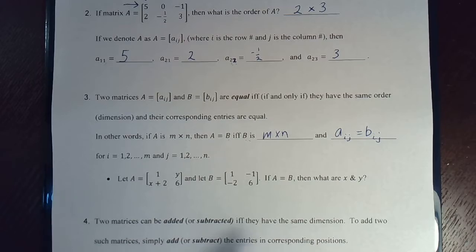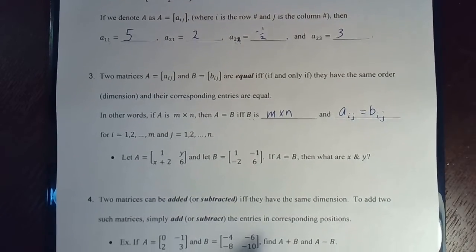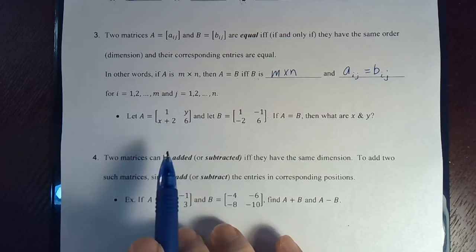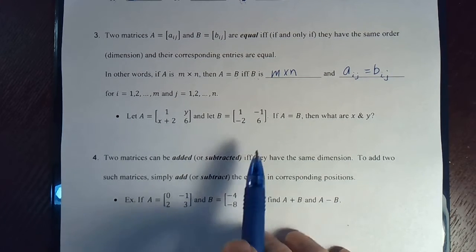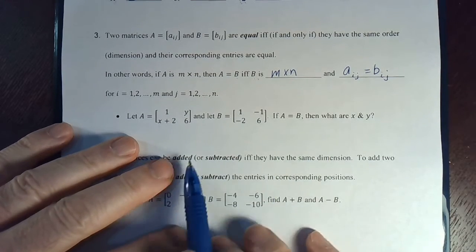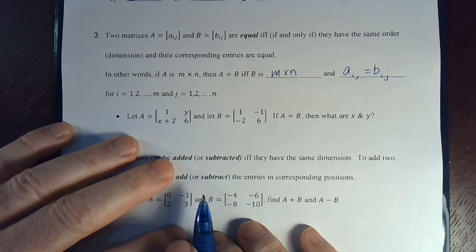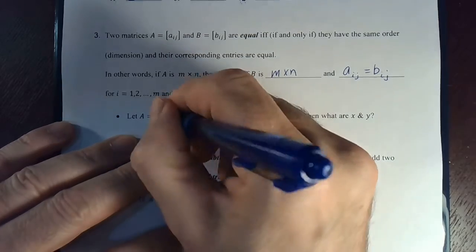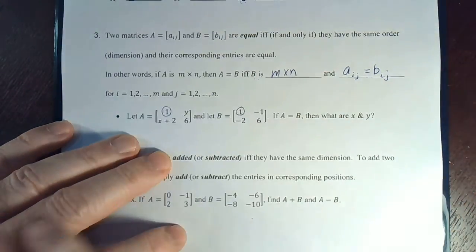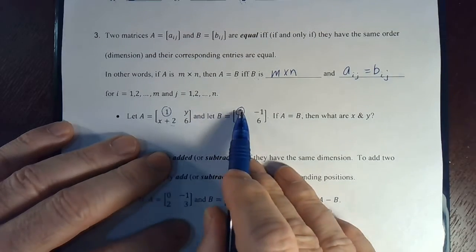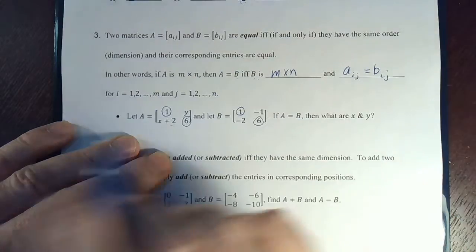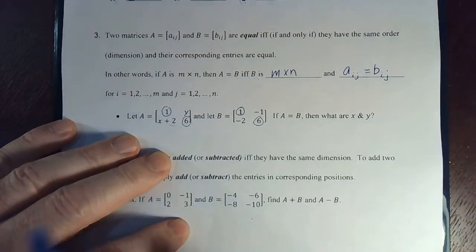So, let's do a real simple example. Let's say that these matrices are equal to each other. And right now, we can't really tell if they are equal to each other. I'm saying if they are equal to each other, then what are X and Y, variables X and Y? Well, first, let's check some of the other ones. Notice that this one is equal to that one. They're in the corresponding spots. Notice this 6 in row 2, column 2 is the same. So, so far we're great.